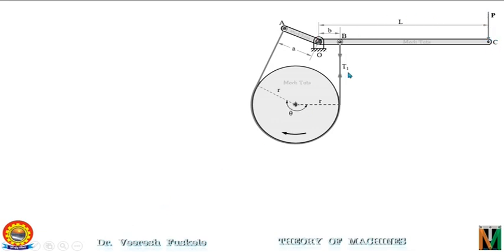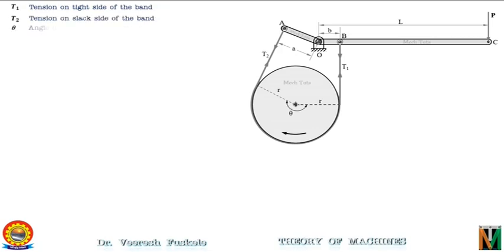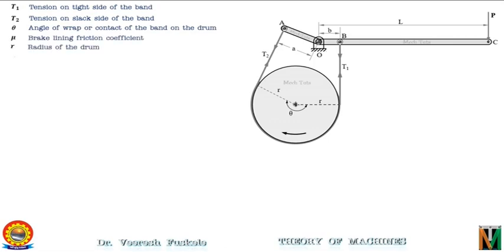As the drum is rotating in the clockwise direction, this will be the tight side and this will be the slack side. The tight side has tension T1 and the slack side has tension T2. T1 is the tension on the tight side of the band, T2 is the tension on the slack side, theta is the angle of wrap or contact of the band on the drum, mu is the coefficient of friction, R is the radius of the drum, and P is the force applied at the end of the lever.